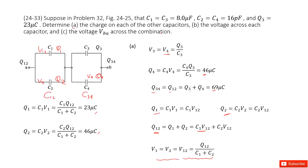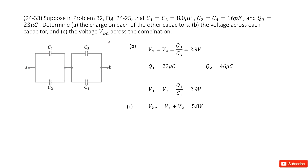For the potential differences across each capacitor: from part A, we have Q1 and Q2. Since C3 and C4 are in parallel, V3 equals V4 equals Q3 over C3, which gives 2.9V. Since C1 and C2 are in parallel, V1 equals V2, and we use Q1 over C1 to find the voltage.